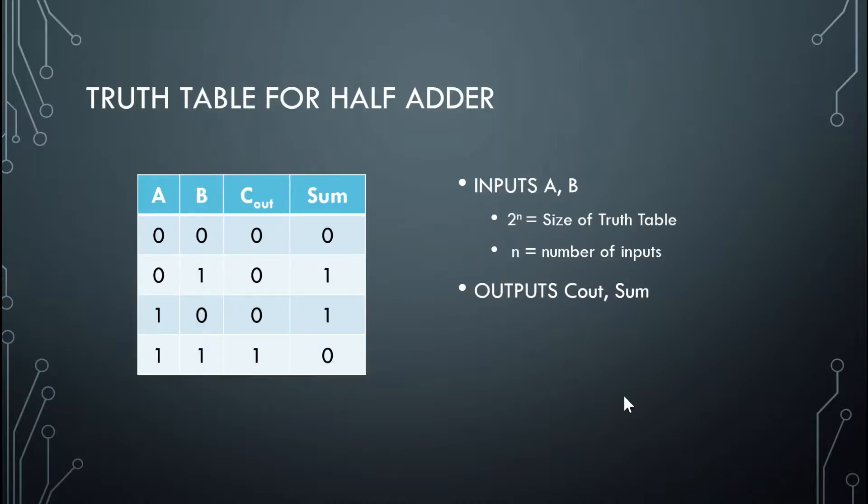Now that we can add in base 2, let's design the truth table. When designing a truth table, you need to look at how many inputs you have and how many outputs you have. Here we have 2 inputs, so we know that our number of inputs is equal to 2, so 2 to the n is equal to 4. And you know that our truth table is going to have to count from 0 to 3, which is 4 places. And we're going to have an output, a Cout and a Sum.